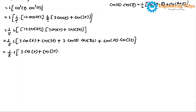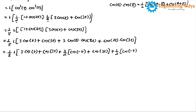For cos(t)·cos(2t): using the defactorization formula we get (3/2)[cos(t − 2t) + cos(t + 2t)] = (3/2)[cos(−t) + cos(3t)]. For cos(2t)·cos(3t): we get (1/2)[cos(2t − 3t) + cos(2t + 3t)] = (1/2)[cos(−t) + cos(5t)].